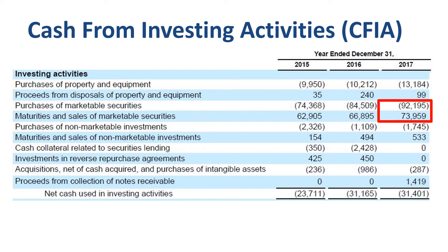They prefer to generate some interest income by converting cash into marketable securities. We saw in the income statement analysis that Alphabet Inc. earned $1.3 billion in interest income in 2017, and we will review in the balance sheet analysis what makes up the portfolio of marketable securities. As you can see, the financial statements are all connected.